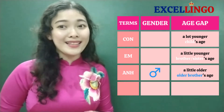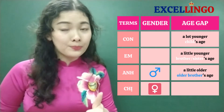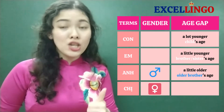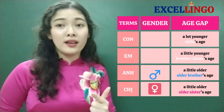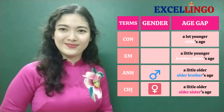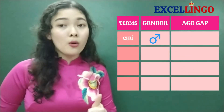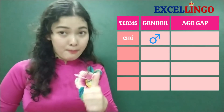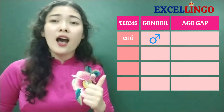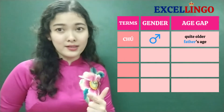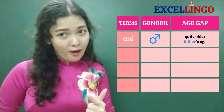We call someone 'dì' when it's a female. We call someone 'chú' when he's quite older than us — about the same age as our father.